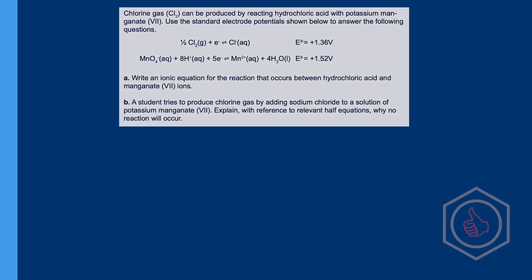For question 1: chlorine gas, Cl2, can be produced by reacting hydrochloric acid with potassium manganate 7. Use the standard electrode potentials shown below to answer the following questions. Write an ionic equation for the reaction that occurs between hydrochloric acid and manganate 7 ions.